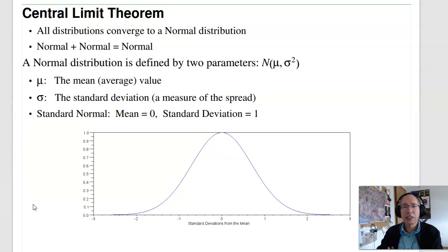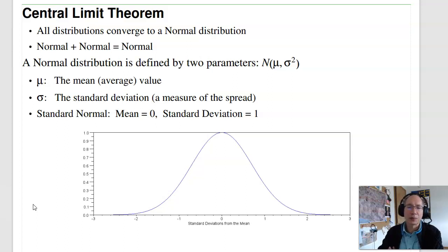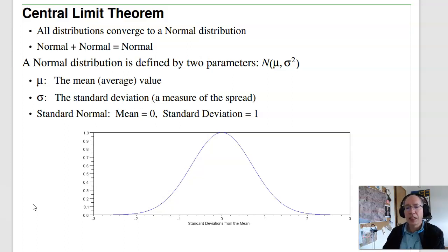The heart of the t-test is the central limit theorem, which states that all distributions converge to a normal distribution under a set of very general assumptions. Plus, you have the property that a normal distribution plus a normal distribution is a normal distribution, so pretty much everything is a normal distribution. A normal distribution is defined by two parameters: the mean and the standard deviation.